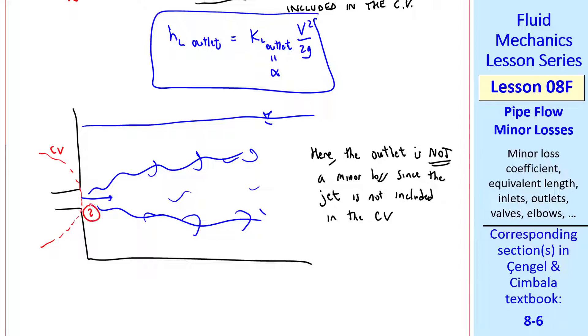In other words, this is our outlet 2, and this is V2. So in this case, we do not include KL outlet.